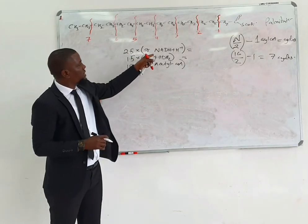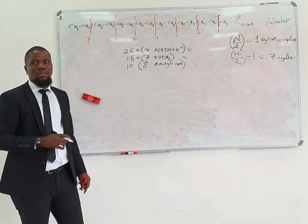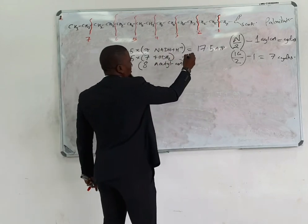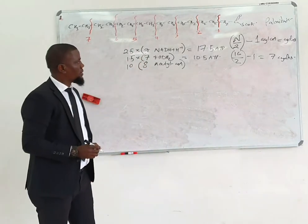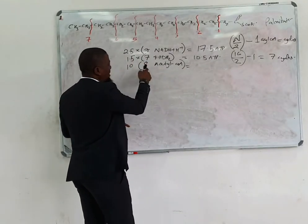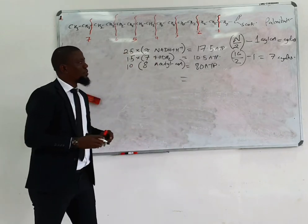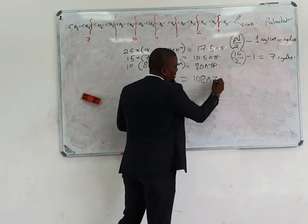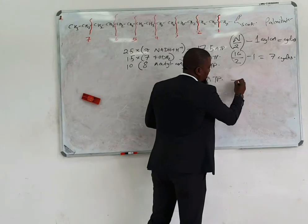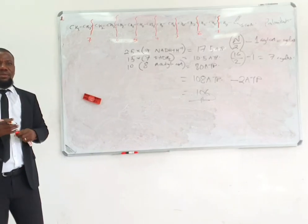So how much energy is produced? Calculate: 2.5 multiplied by 7 equals 17.5 ATP. Plus 10.5 from FADH2. Plus 8 times 10 equals 80 from acetyl-CoA via TCA cycle. Total is 108 ATP.